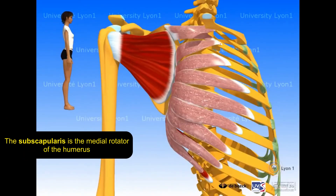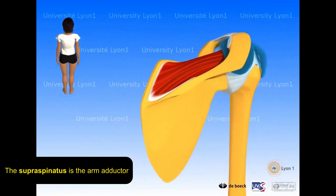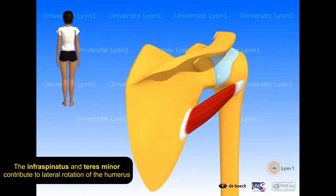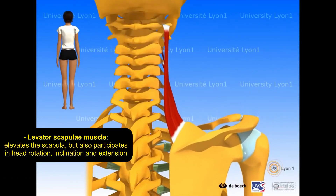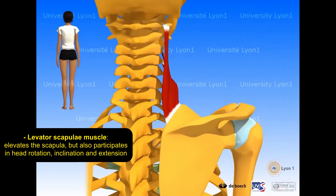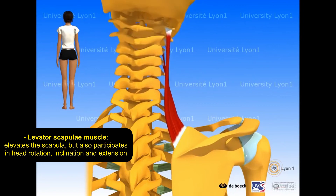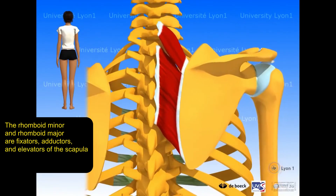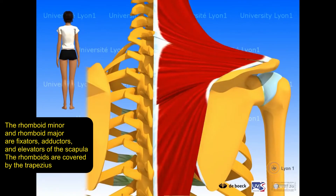The subscapularis is the medial rotator of the humerus, the supraspinatus is the arm abductor, and the infraspinatus and teres minor contribute to lateral rotation of the humerus. The levator scapulae elevates the scapula and also participates in head rotation, inclination, and extension. The rhomboid minor and rhomboid major are fixators, adductors, and elevators of the scapula — covered by the trapezius.